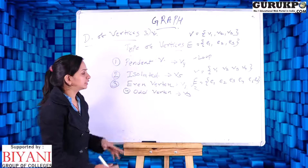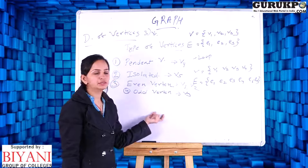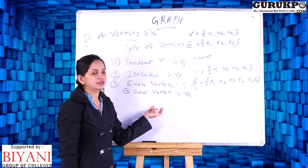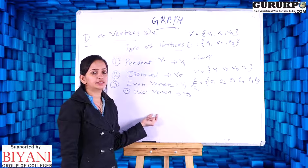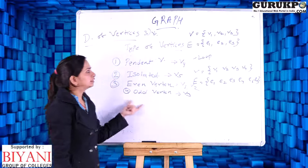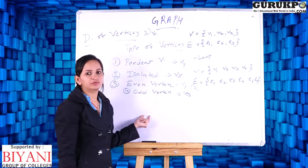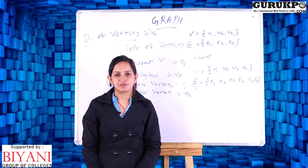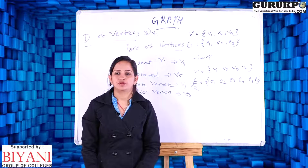We have seen the types of edges — loop and parallel edges — as well as the types of vertices: pendant, isolated, even, and odd. We will discuss the types of graphs in the next video. If you like this video, please like, comment, share, and don't forget to subscribe to our channel. Thank you so much.